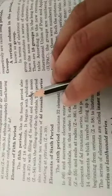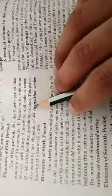Hello students, now we discuss about the 5th period. In 5th period, like the 4th period, also consists of 18 elements. It begins with rubidium and filling of 5s orbital and ends with xenon, which is the filling of 5p orbital.